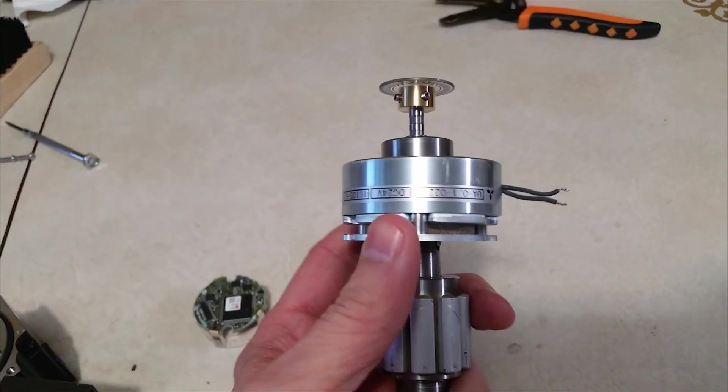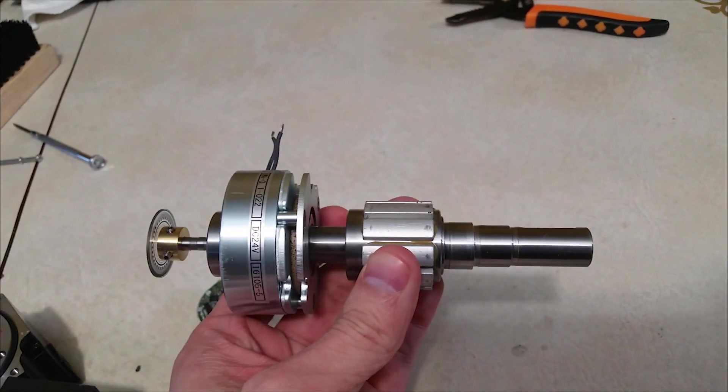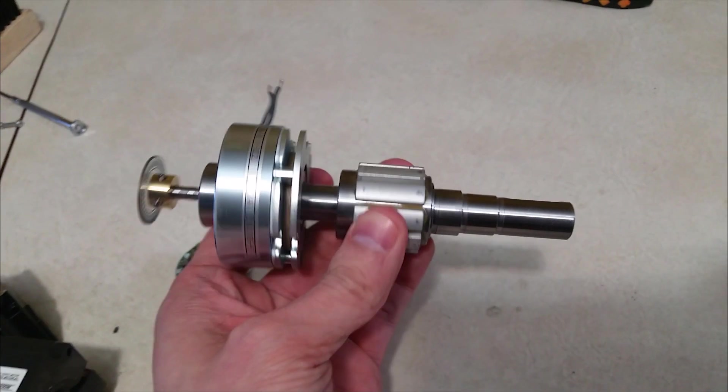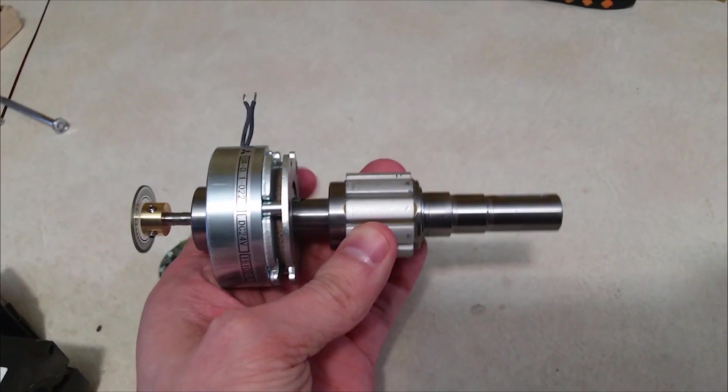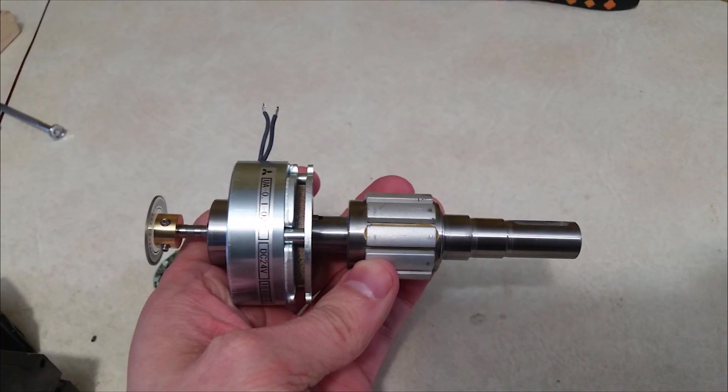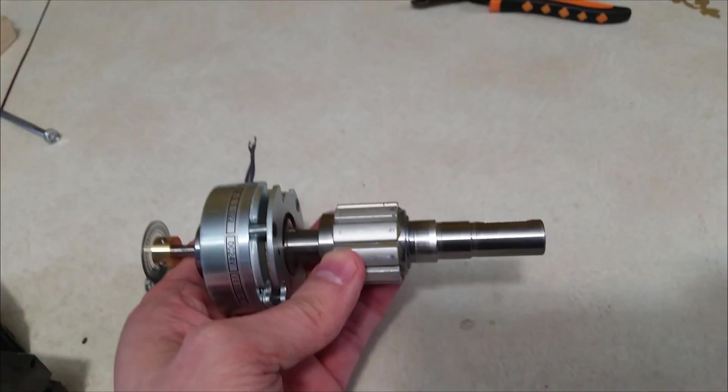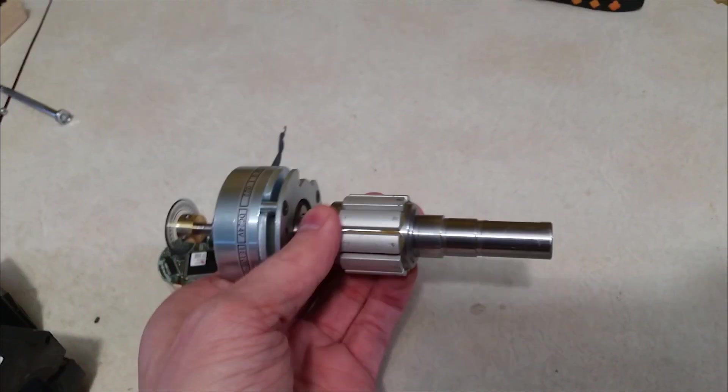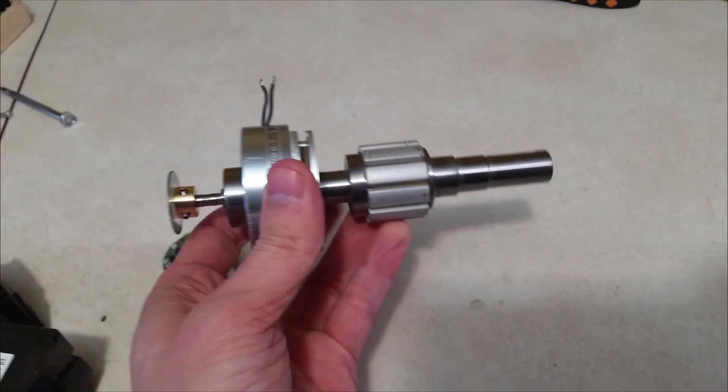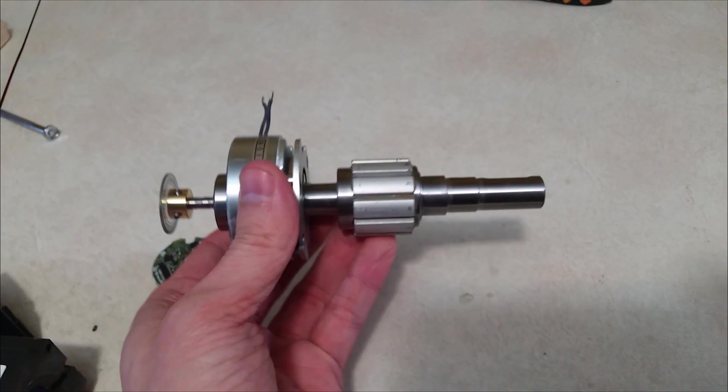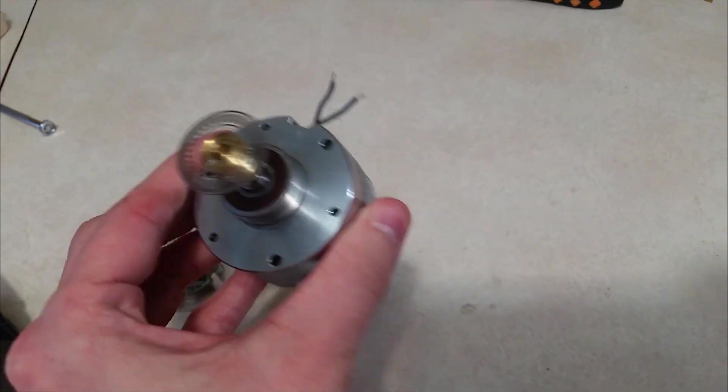And the cool thing is depending upon how you program them, they can catch up. So in other words, you can give them leeway to be out of position. And then they will do a calculation to say, okay, I need to spin faster in order to catch back up within the amount of time. And if they can't, they'll throw an error code. Or if anything happens, they'll shut down rather than lose position. And they'll give you an error code on here.